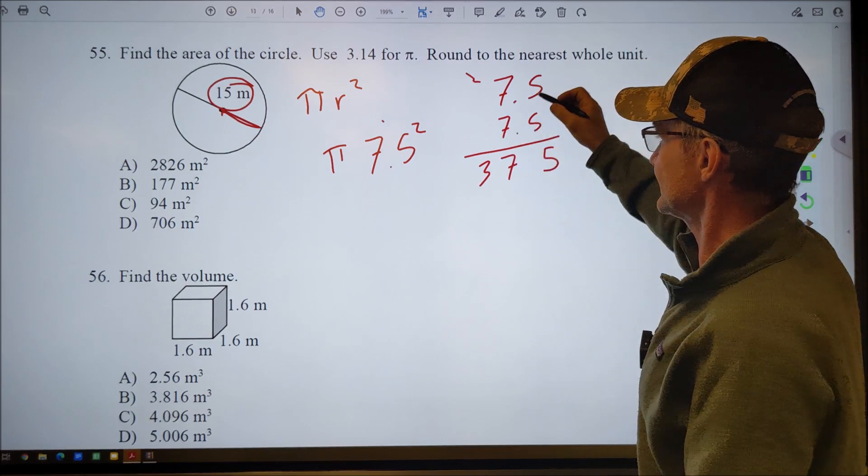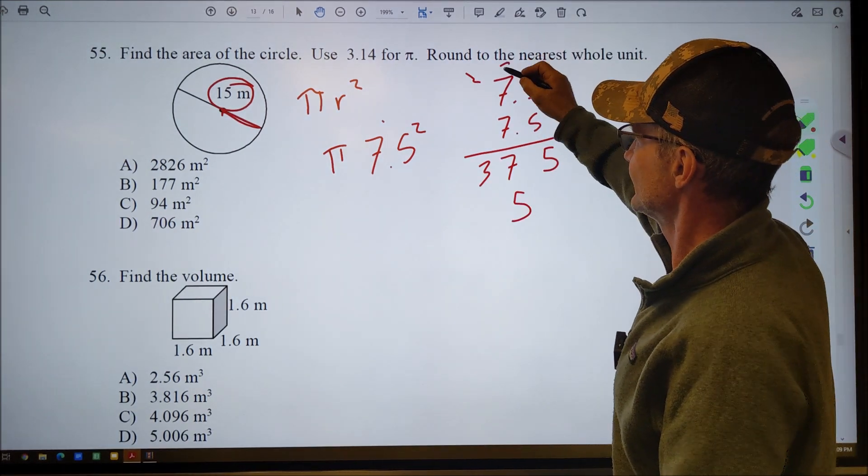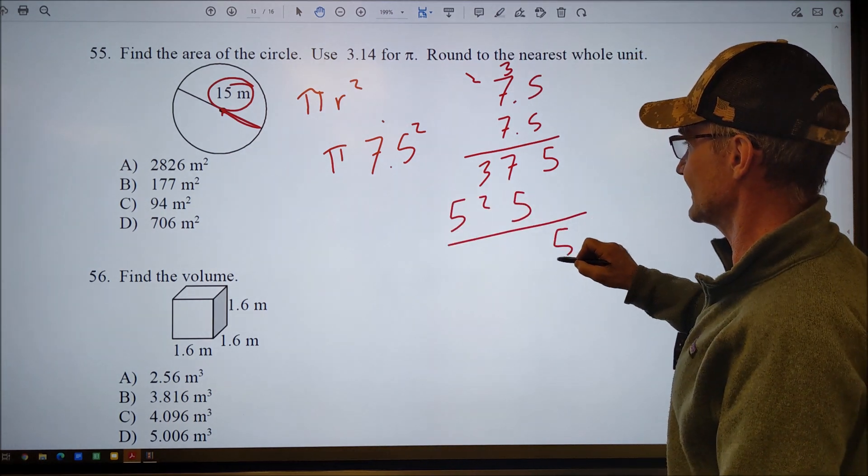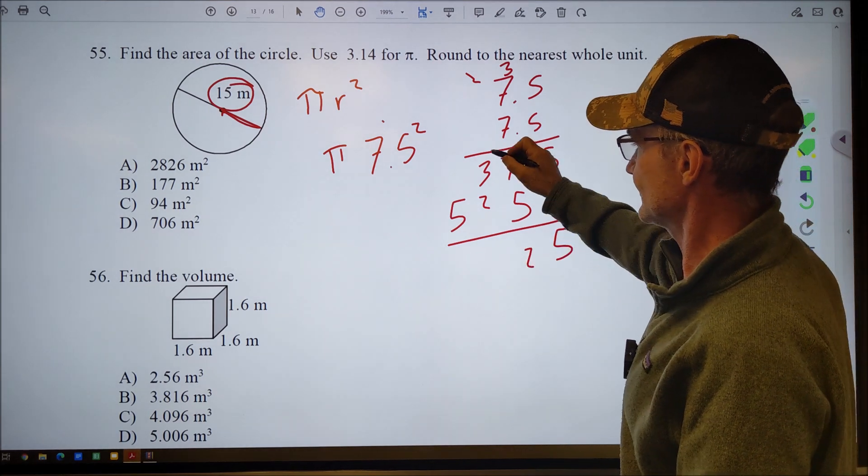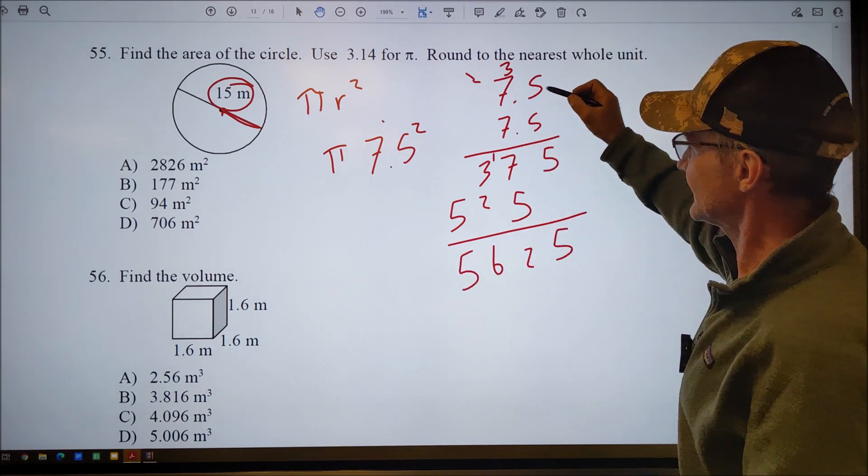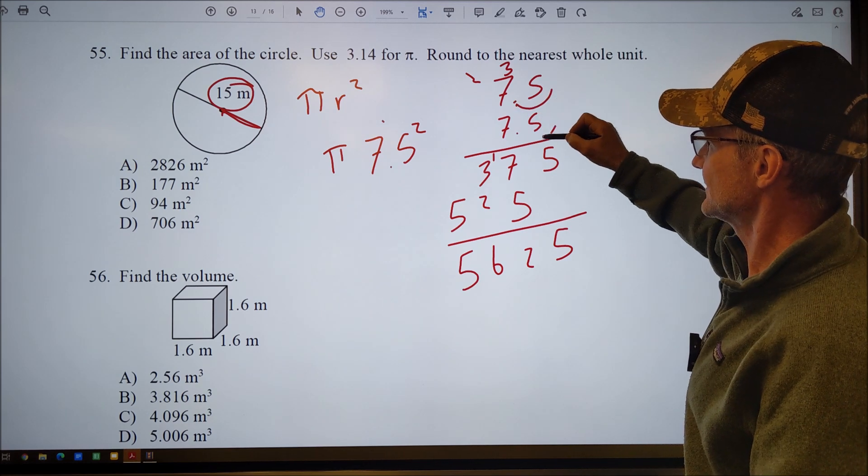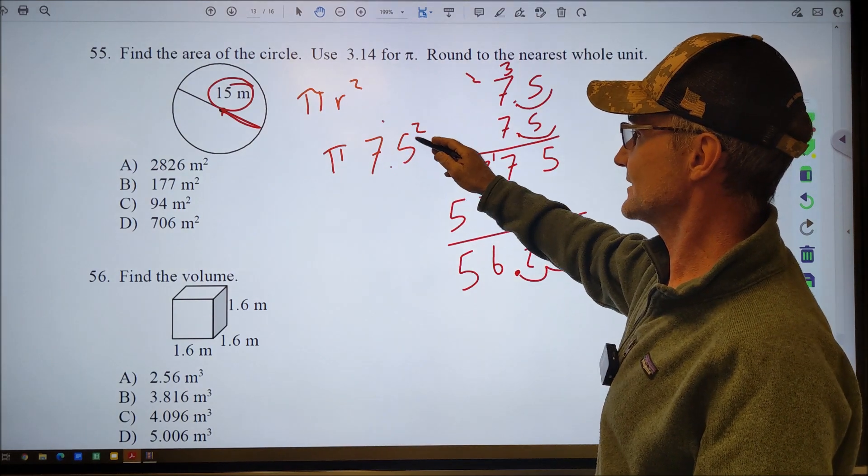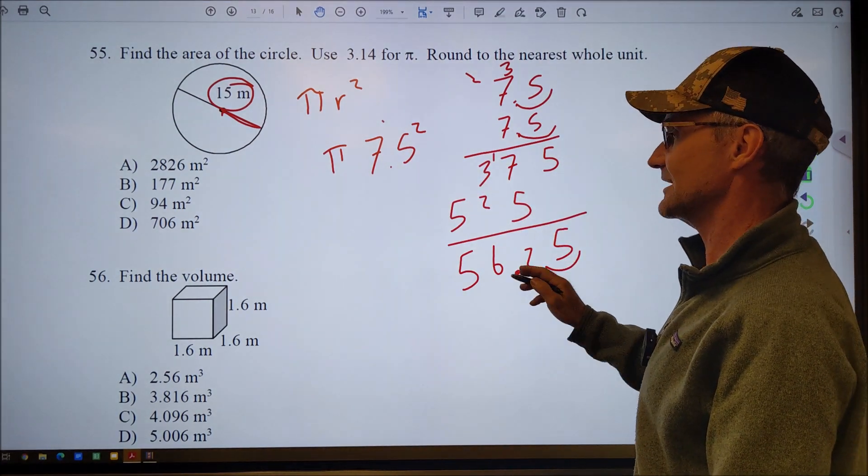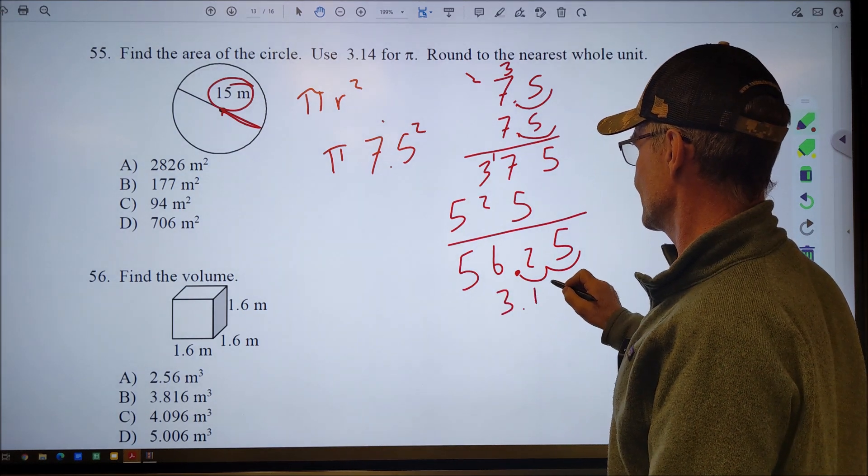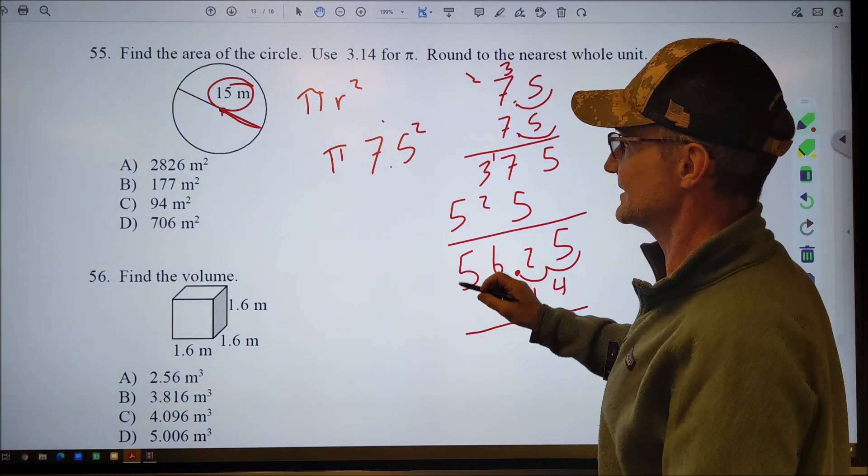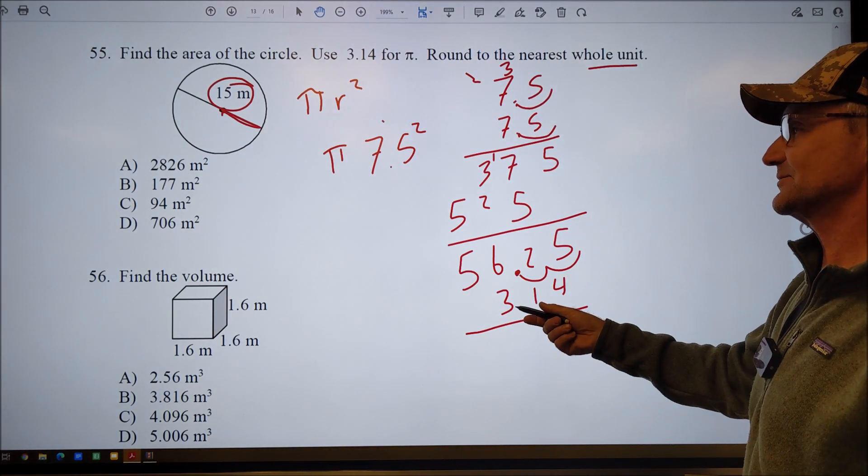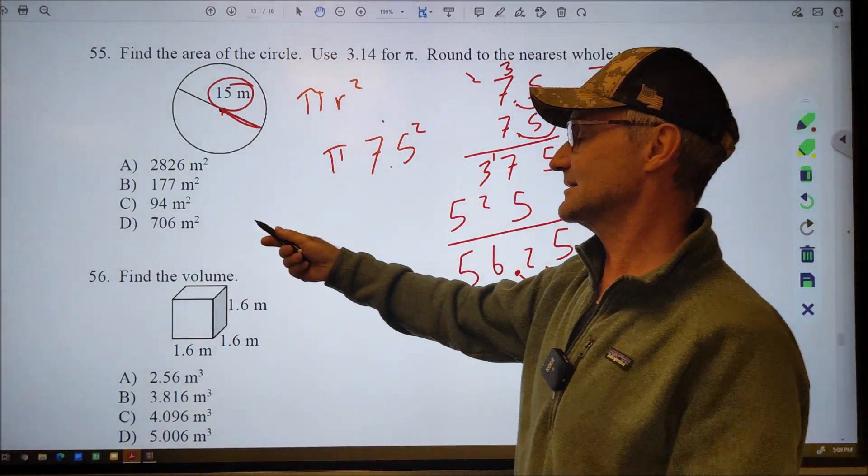5 times 5 is 25. Carry the 2. 35, 36, 37. 7 times 5, 35. Carry the 3. 49, 52. I add those together to get 5, 12. Carry the 1, 6, 5. Then I count over how many decimal places I have. 1, 2. So I go over 1, 2. So 7.5 times 7.5 is 56.25. Now I have to do that 56 times 3.14.